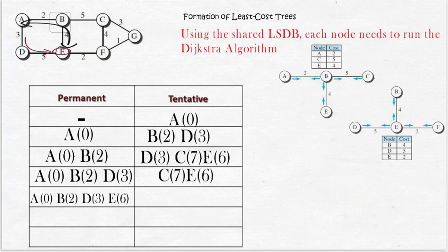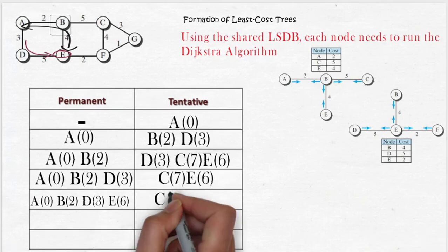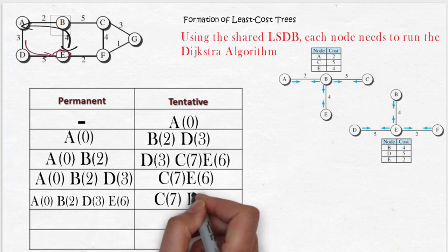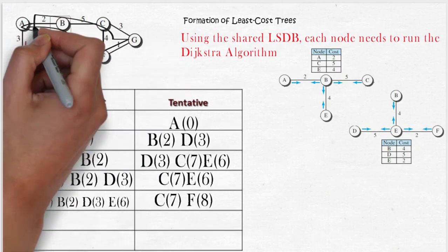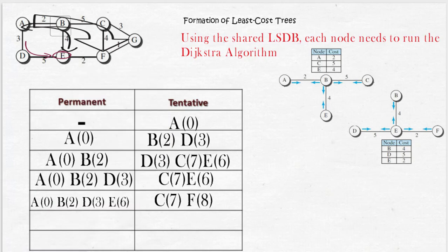Because B and D are already confirmed, node F with cost 8, the cost from node A through B and E, is considered in tentative. For node F from A, the cost through B, C, and F is higher than the link from A, B, E, and F, so F with this cost is considered here.